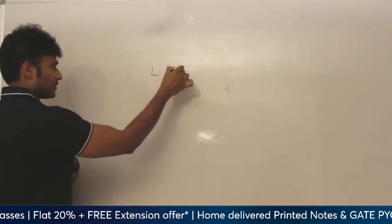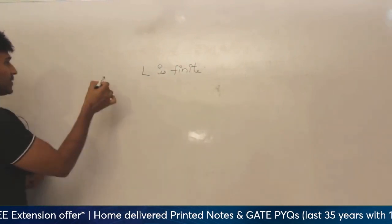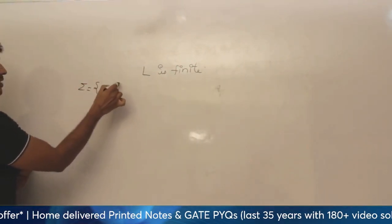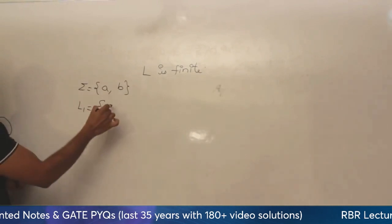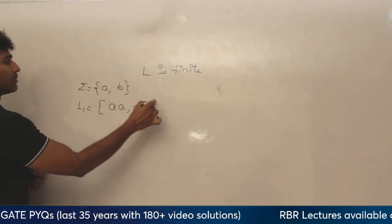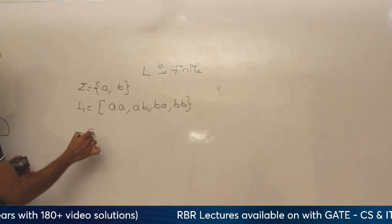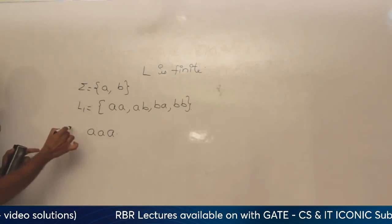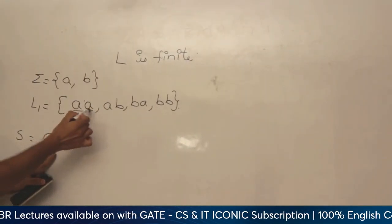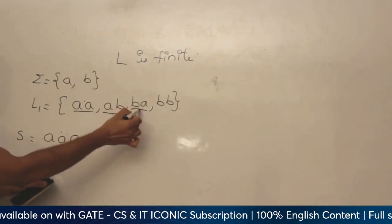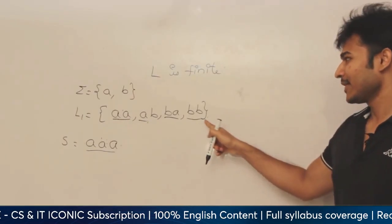If L is finite — for example, if sigma equals {a, b} and L1 equals the set of all strings of length 2: {aa, ab, ba, bb} — if this is the language and if I give any string, let us say aaa, and if I ask whether this string is present in this language or not, you could take each string, examine it, and verify — and you can say that it is not there. Since the language is finite, you can do it.